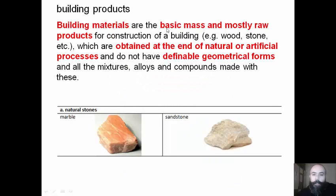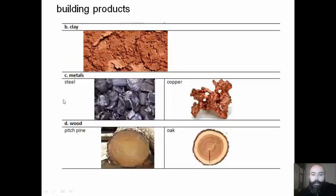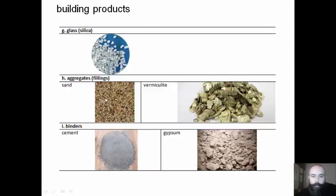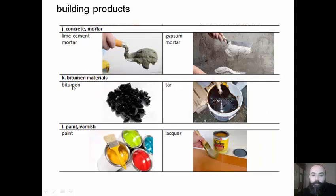Let's look at building materials. These are the basic mass and mostly raw materials and raw products for the construction of a building. They can be obtained at the end of natural or artificial processes, and importantly, they do not have definable geometrical forms. They can be natural stones like marble or sandstone, clay, steel, copper and other metals, wood, fibers, plastics, glass, aggregates, binders, concrete, mortar, bitumen materials, paint, and varnish.